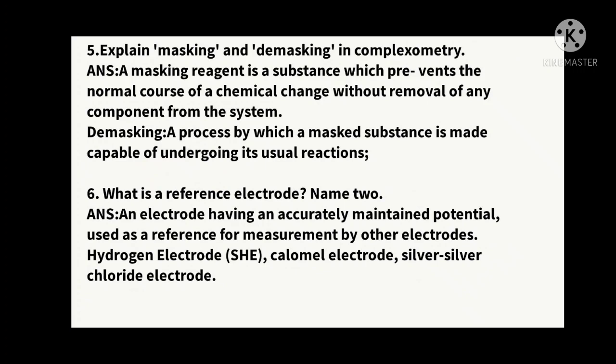Fifth question: explain masking and demasking agents in complexometry. Masking is a substance which prevents the normal course of a chemical change without removal of any component from the system. Demasking is the opposite — a process by which a masked substance is made capable of undergoing its usual reaction, meaning we remove the masking and allow the casual reactions to proceed.